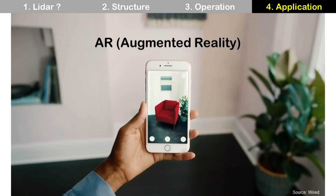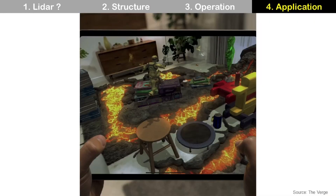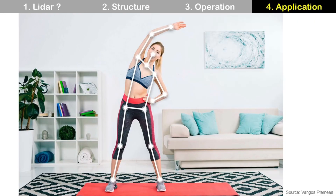This LiDAR can do many things that are very useful in our life. One example is AR, augmented reality. You can check whether your new sofa will fit in your living room with AR even before you buy it, saving you time. You can also play AR games with LiDAR. LiDAR can track your body and can be used for fitness. There are many more applications to come using LiDAR.